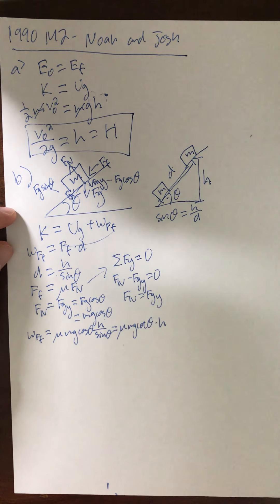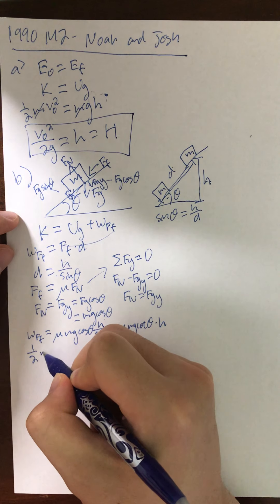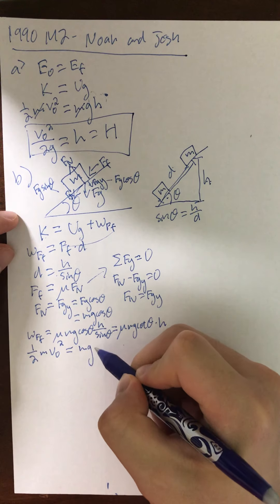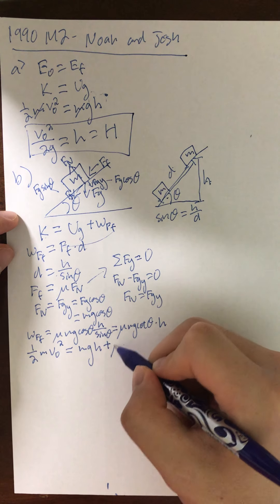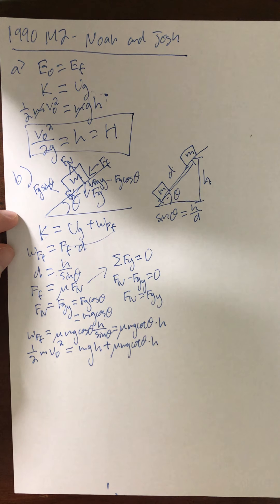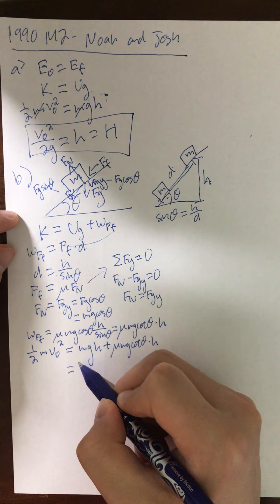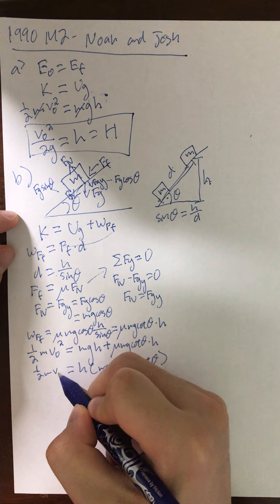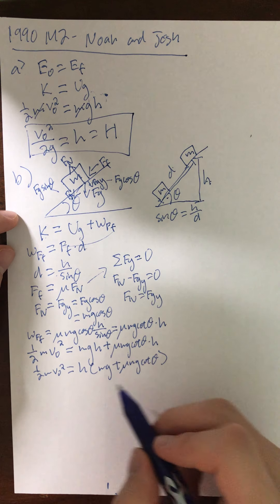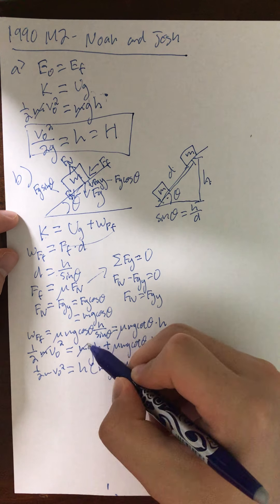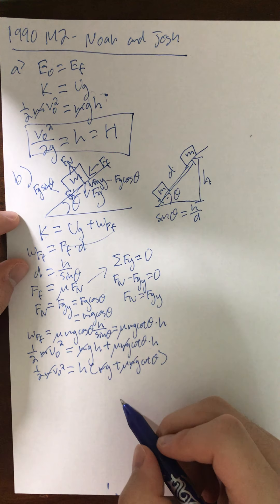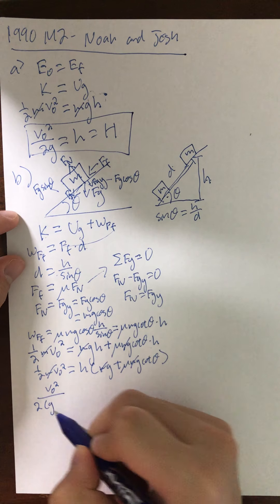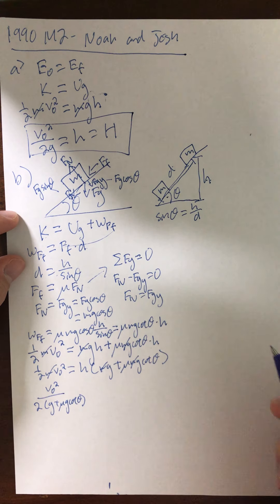Going back to the conservation of energy equation, we have one-half mass v-initial squared for kinetic energy at the beginning, and then for the final state: mg times height plus mu mg cotangent theta times height. Factoring out h from the right side and canceling all the m's from both sides, then dividing through, we get v-initial squared over two times (g plus mu g cotangent theta) equals h.